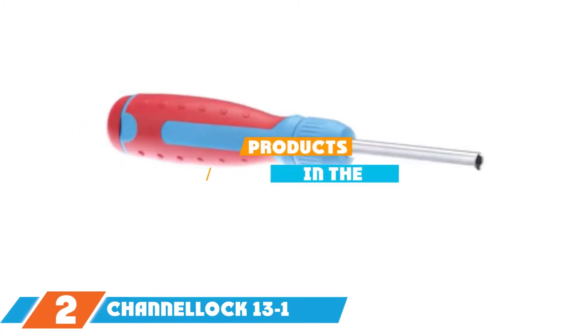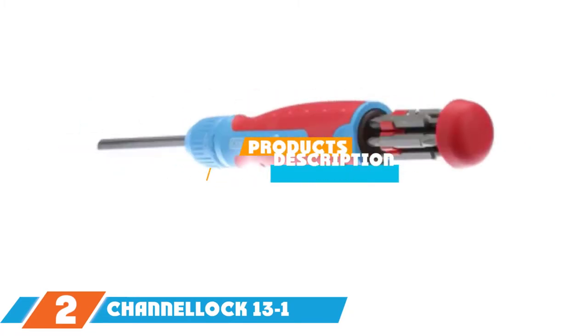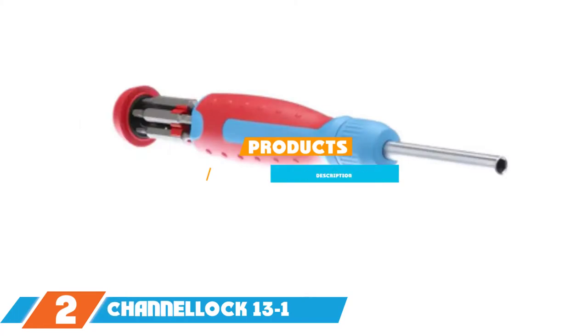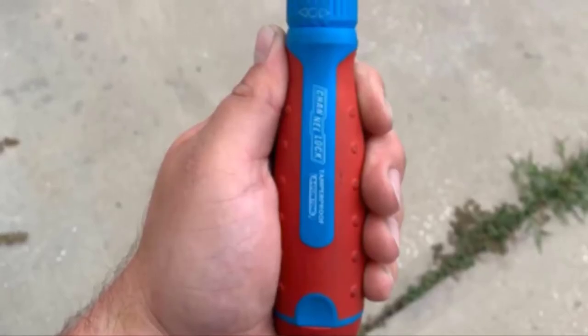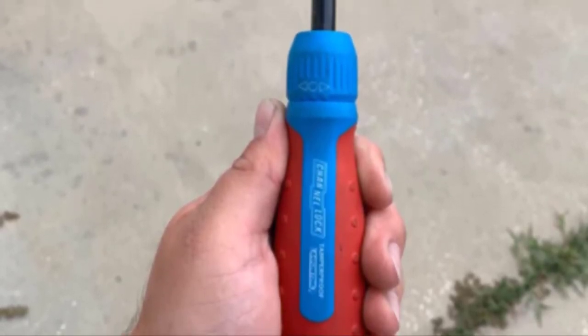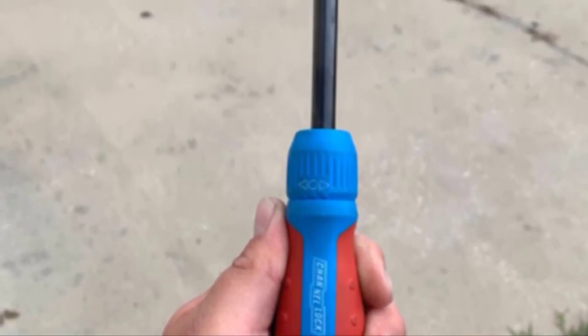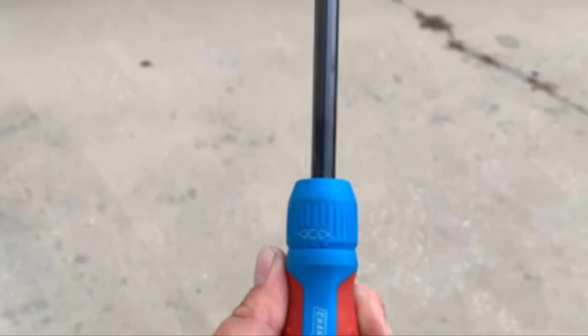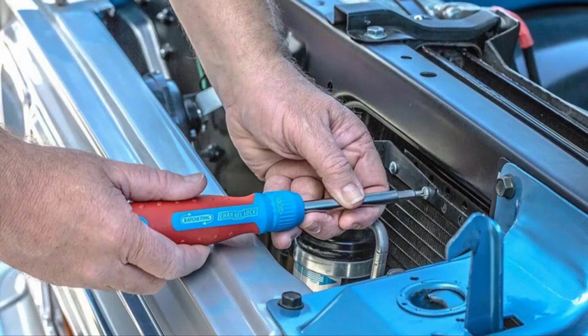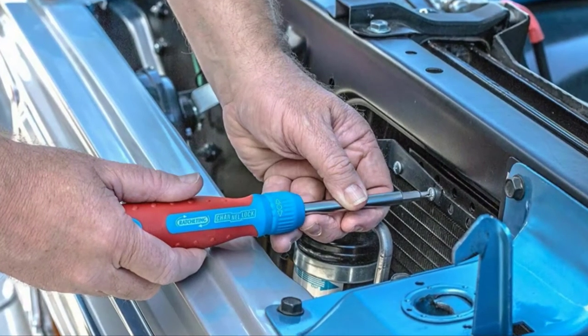Moving on to the next at number 2 with Channel Lock 13-in-1 Ratcheting Screwdriver. With 28-tooth ratchet, the screwdriver gives you the high torque you need and more. The ratcheting action provides an easy, smooth and fast two-way function. It has a grip that is made of comfortable composite material. It comes with 13 bits, so you can use it on various fastener sizes.